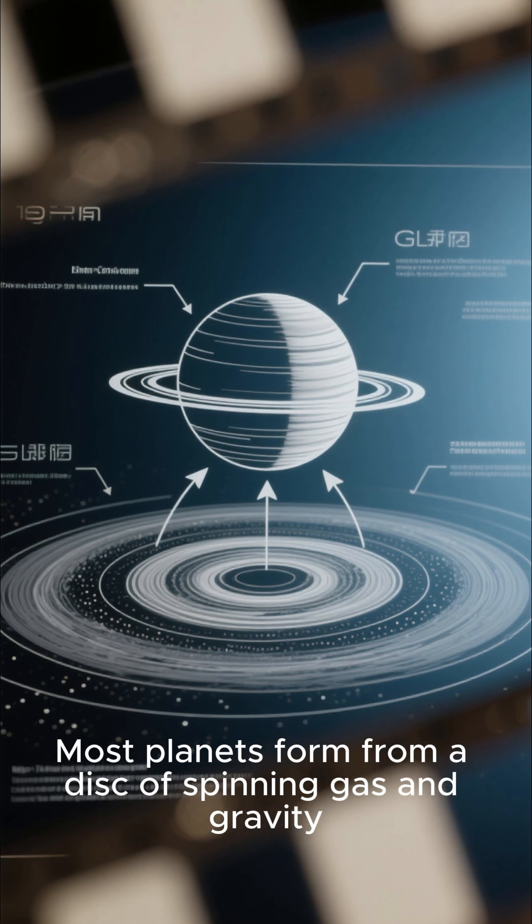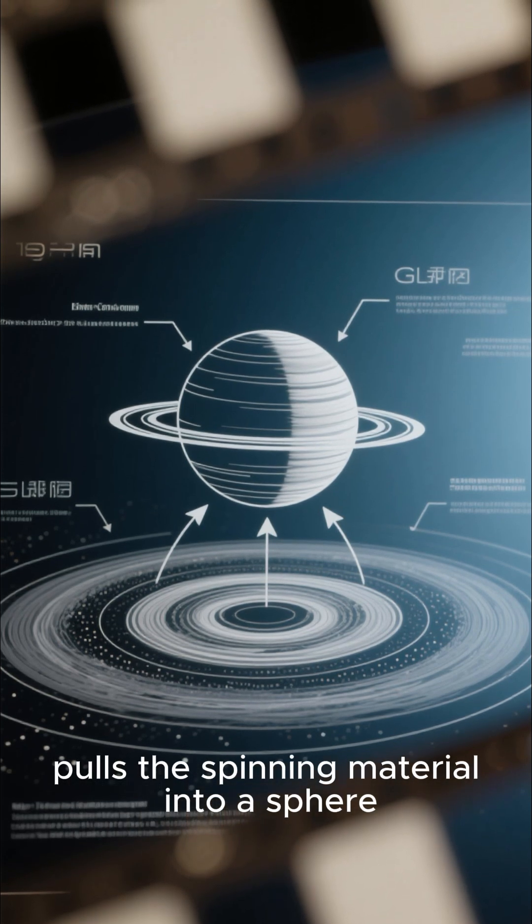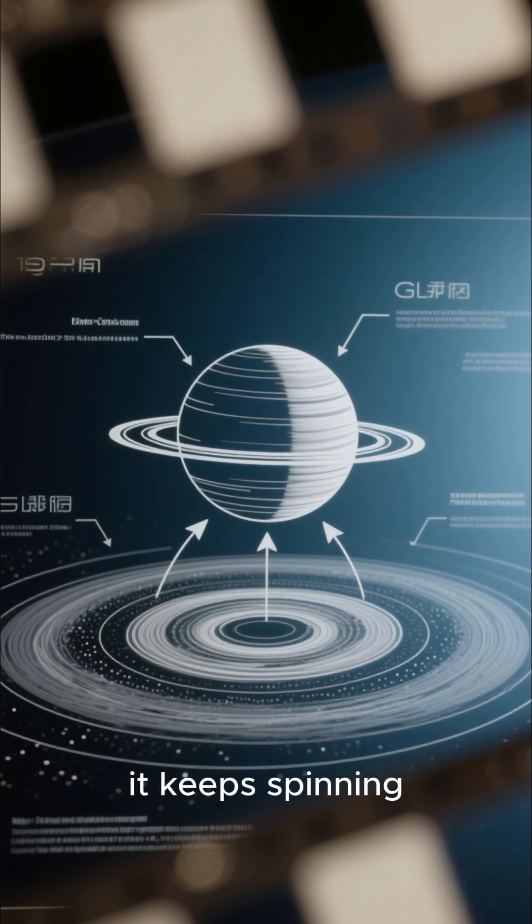Most planets form from a disk of spinning gas, and gravity pulls the spinning material into a sphere. That means as the planet forms, it keeps spinning.